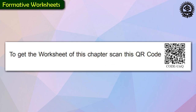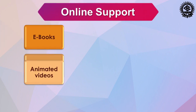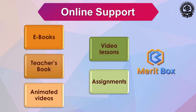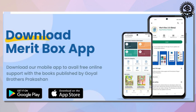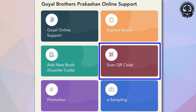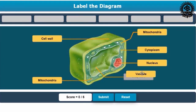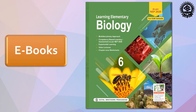Chapter-wise formative worksheets are given at the end of each chapter as QR codes for extended learning. For online support, students and teachers can access digital content from anywhere through the enhanced mobile application Merit Box. QR codes given along with topics can be scanned to view video lectures. We have also included chapter-wise worksheets, interactive exercises, and e-books in our online support.